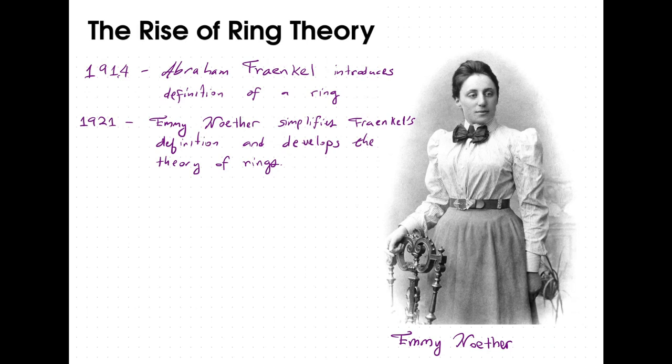Emmy Noether got her PhD in 1907 and did monumental work in number theory and physics early on, but was unable to get an academic position. In 1915, David Hilbert and Felix Klein attempted to get her a position at the University of Göttingen, but they were not successful. The faculty voted against her appointment, and one faculty member protested: 'What will our soldiers think when they return to the university and find that they are required to learn at the feet of a woman?' Hilbert responded with indignation: 'I do not see that the sex of the candidate is an argument against her admission as a private citizen. After all, we are a university, not a bathhouse.'